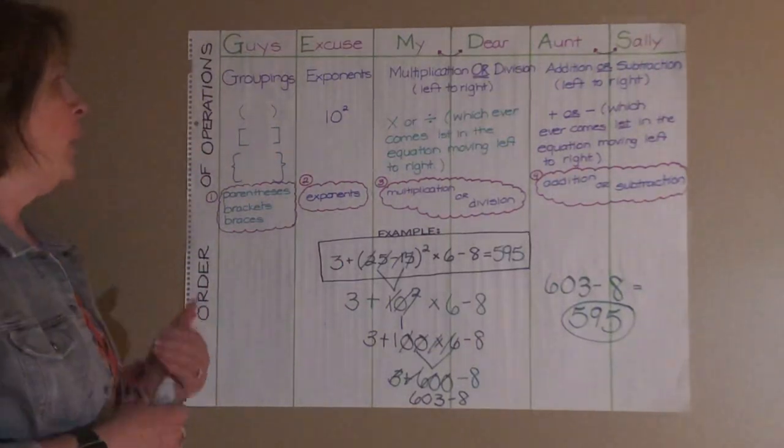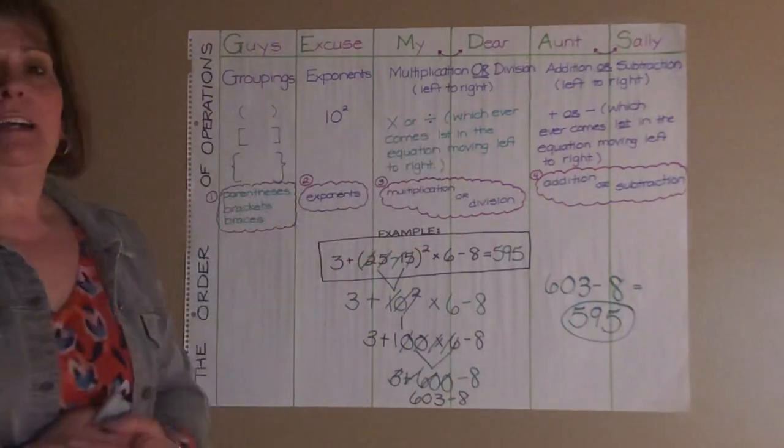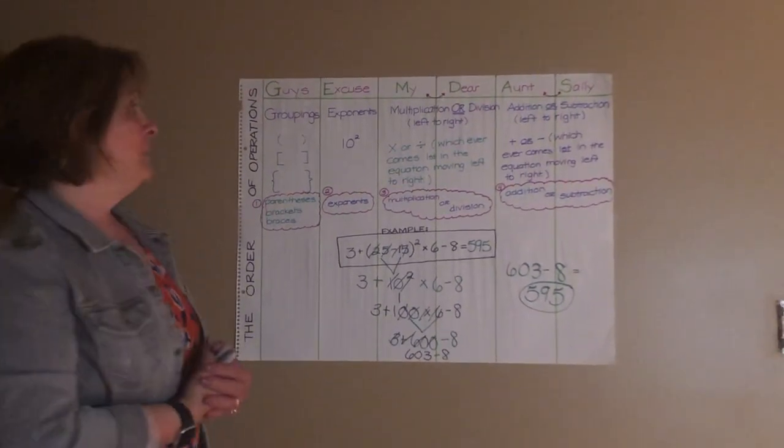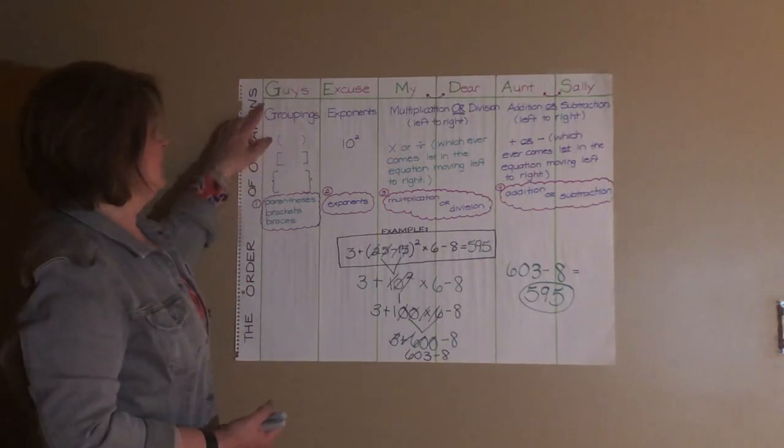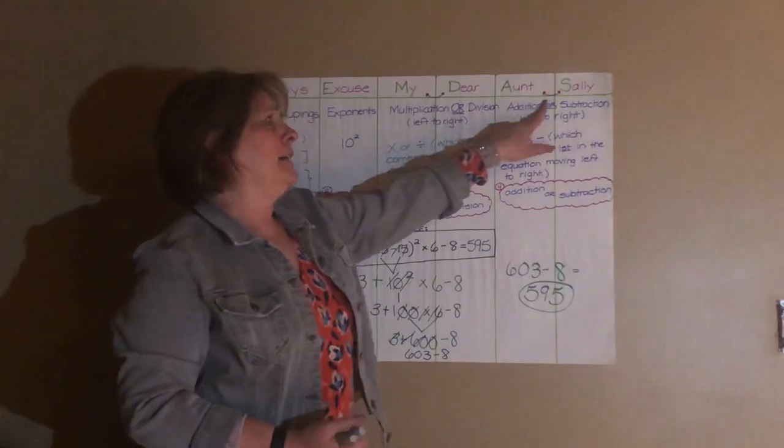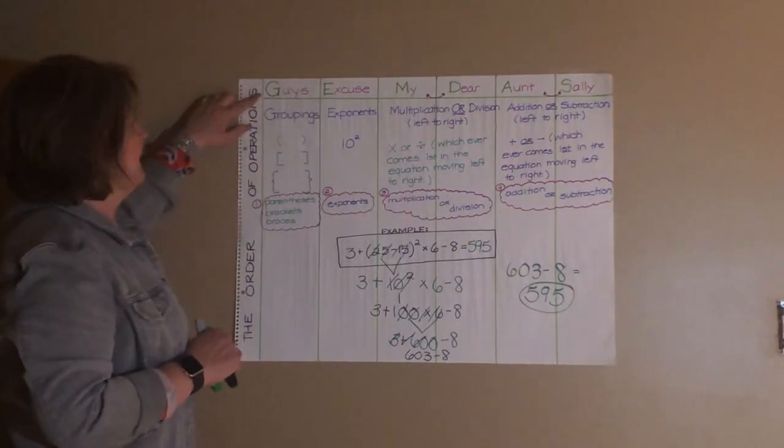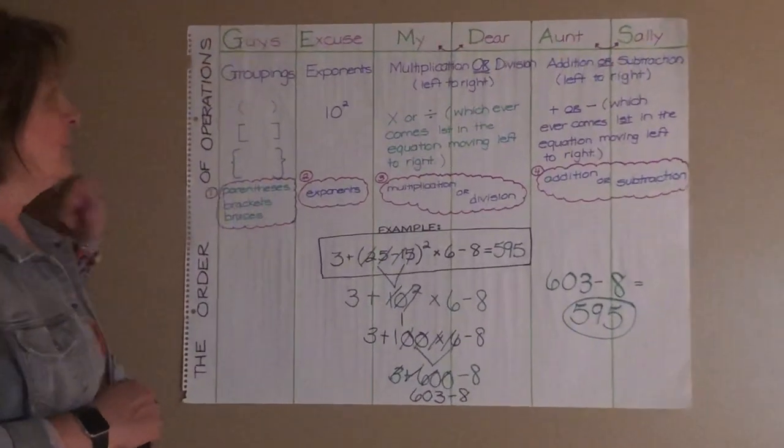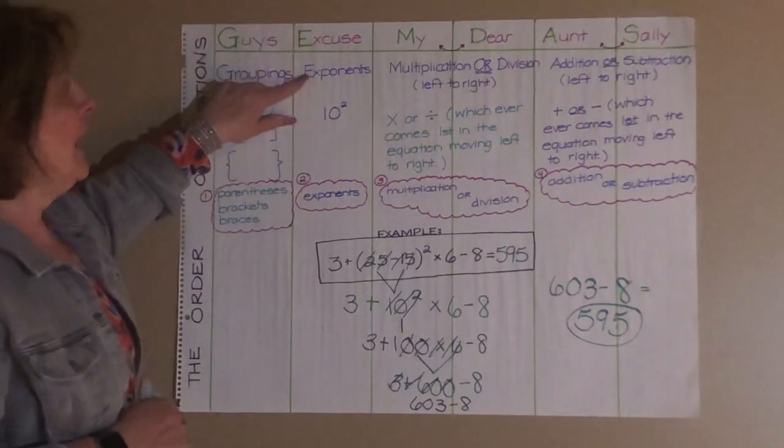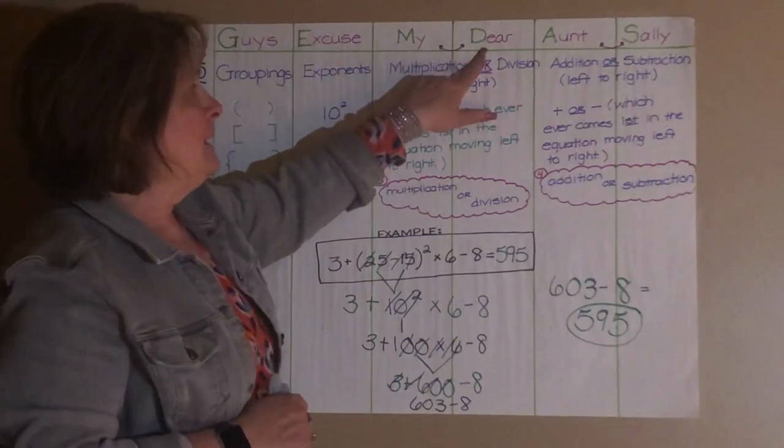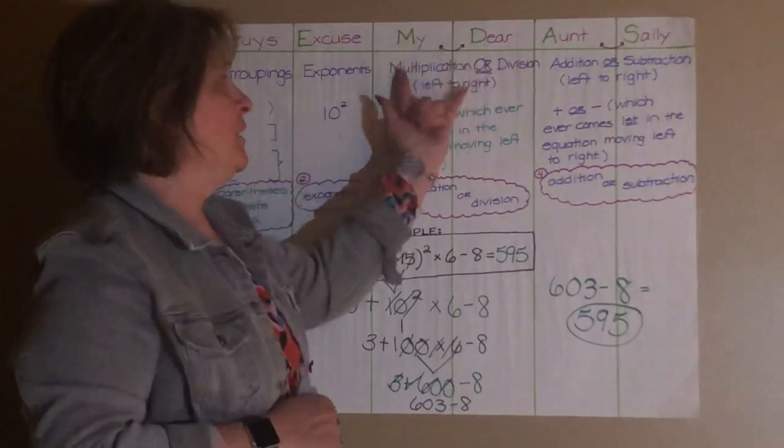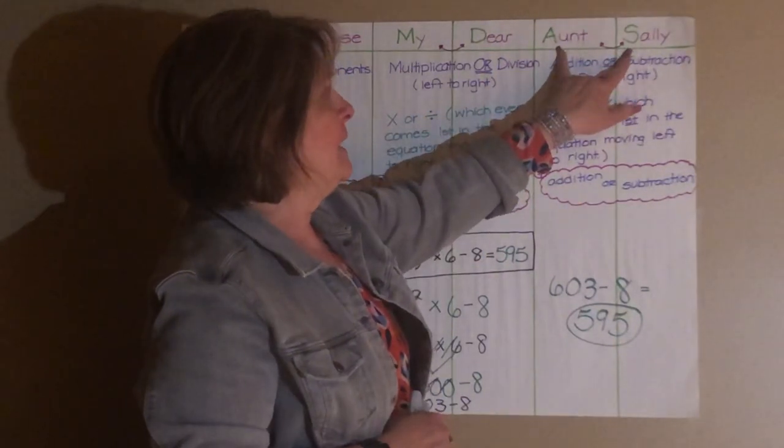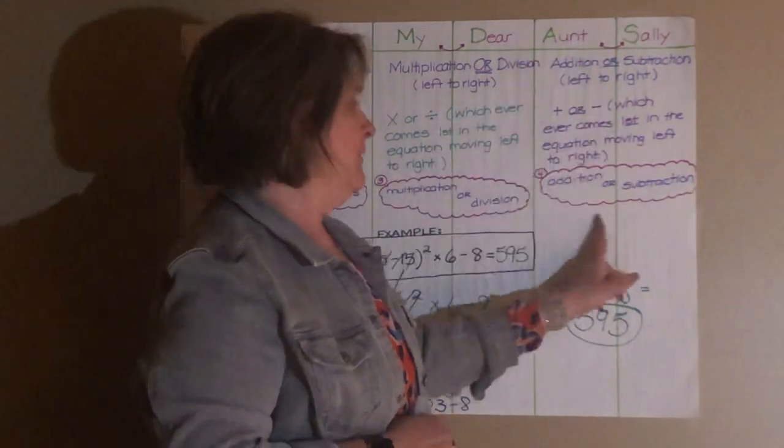So we're just going to take a look one more time at this, and we're going to discuss it more in our Zoom class on Tuesday. So just take a look so you can try to remember some of these. Guys, excuse my dear Aunt Sally. You know how smelly she is. And that stands for, the G stands for groupings. Groupings are parentheses, brackets, or braces. E stands for exponents. M and D, multiplication or division, whatever comes first, left to right. A and S for Aunt Sally. Addition or subtraction, left to right.